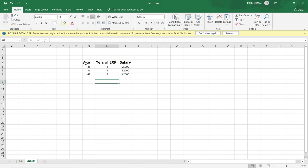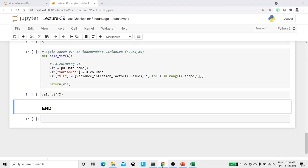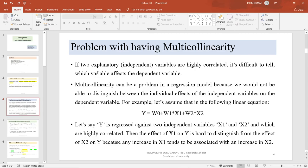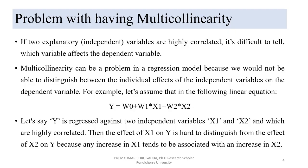For example, consider age and years of experience as two independent variables, and salary as the dependent variable. These two independent variables both influence salary. If age is increasing, then years of experience also increases. So age and years of experience are highly correlated, and it is difficult to tell which variable — age or experience — affects the dependent variable salary.